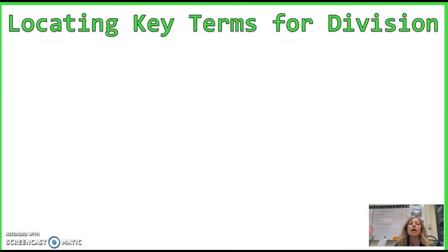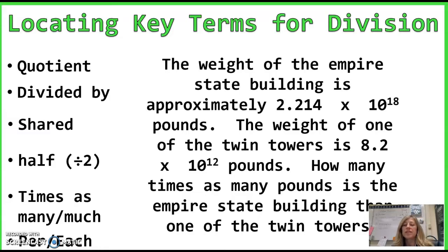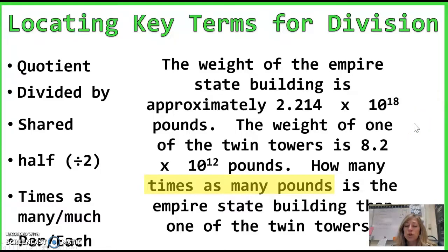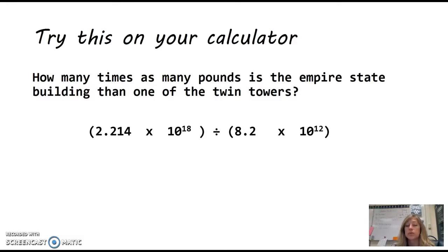And on to division. Here are the key terms: quotient, divided by, shared, half — half means divide by 2 — times as many, much, per, and each. The weight of the Empire State Building is approximately 2.214 times 10 to the 18th pounds. The weight of one of the Twin Towers is 8.2 times 10 to the 12th pounds. How many times as many pounds is the Empire State Building than one of the Twin Towers? We're dividing; highlight times as many pounds. Start with the Empire State Building and divide it by one of the Twin Towers. Press pause while you're doing it, and when you're ready compare your answer with mine.